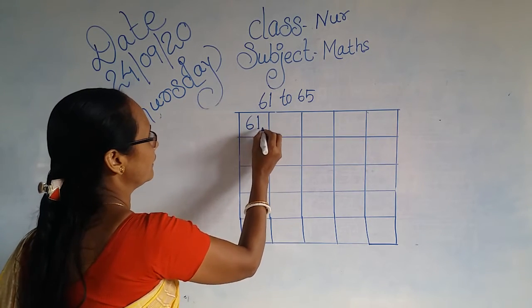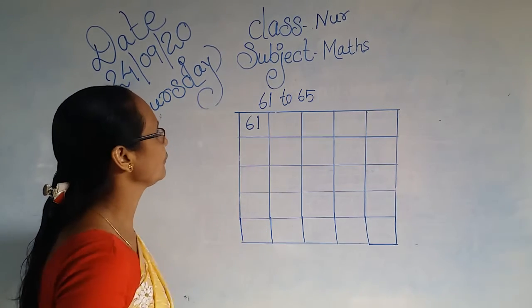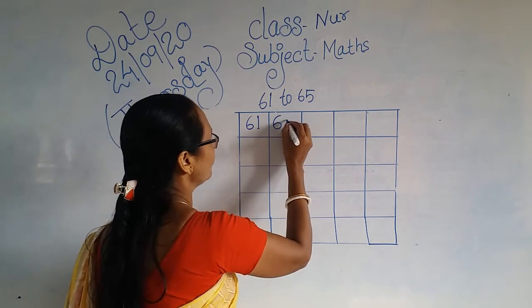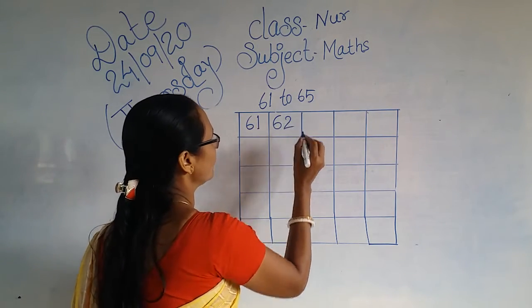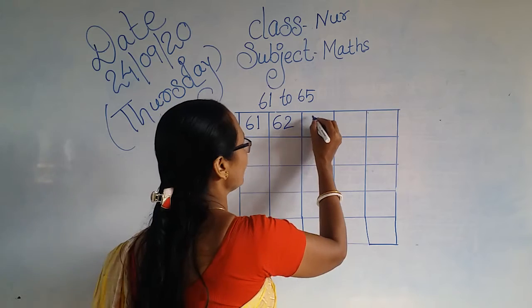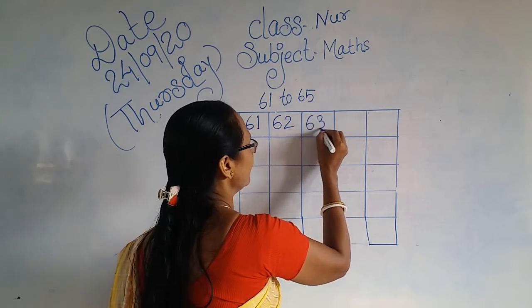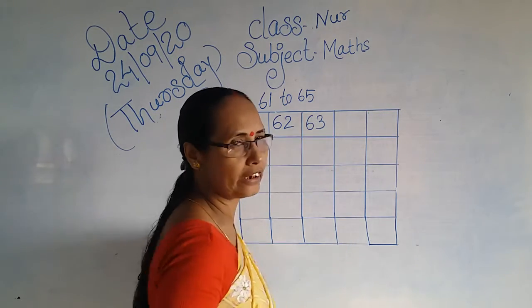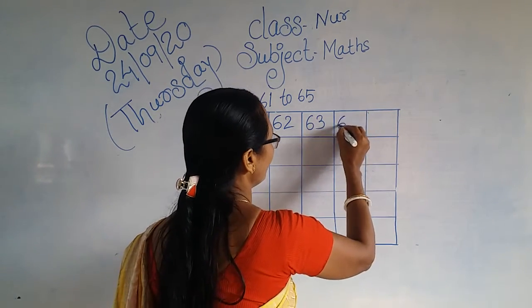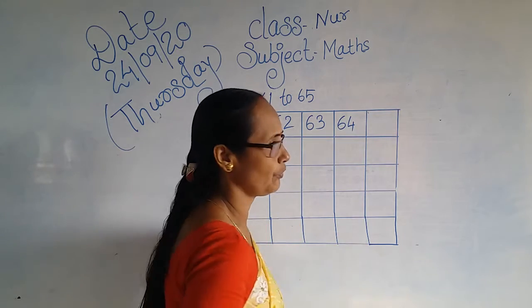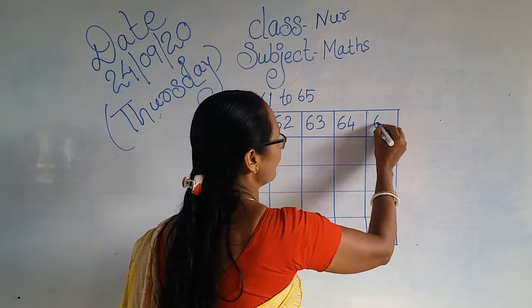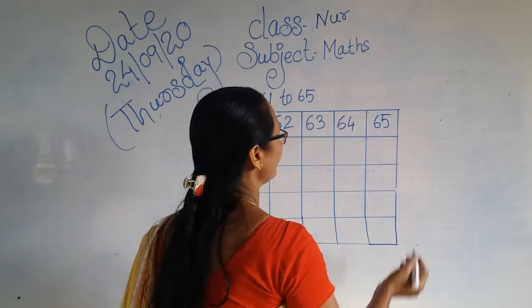6, 1 — 61. 6, 2 — 62. 6, 3 — 63. 6, 4 — 64. 6, 5 — 65.